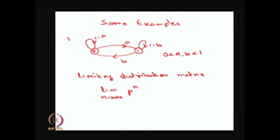I am going to discuss the simple situation of how we can get the limiting state probabilities. This is a simple two-state model which can be interpreted in many situations. For example, you can think of a weather problem in which state 0 is a rainy day and state 1 is a sunny day. The probability of the next day being sunny from a rainy day is A, and from rainy to sunny is B. The probabilities of staying in the same state are 1 minus A and 1 minus B, and both A and B lie in the open interval (0, 1).